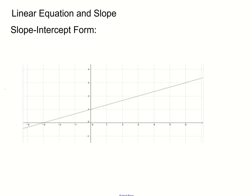First, we're going to discuss the slope-intercept form. We have a line in front of you and we're going to discuss how you find the slope and the y-intercept. The slope-intercept form is y equals mx plus b. In this case, m is your slope and b is your y-intercept.